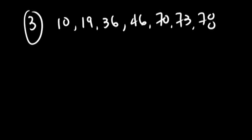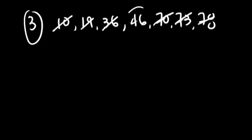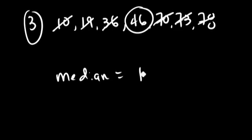First, I need to sort my data. It looks like they were very nice to us — our data is already sorted from smallest to largest: 10, 19, 36, 46, 70, 73, 78. To find the median, cancel the smallest and largest pairs, and we're left with the value of 46. So the median is 46.